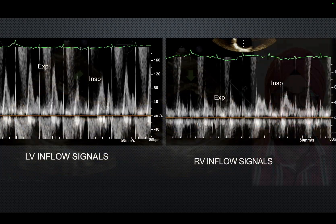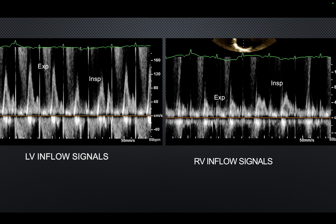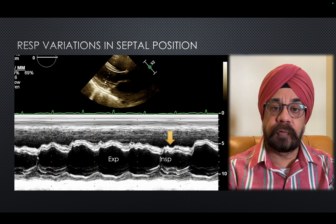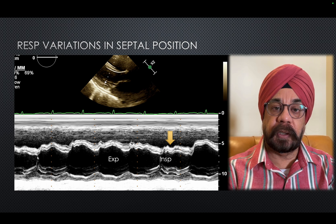Respiratory phasic variation is a very characteristic hallmark of constrictive pericarditis which differentiates it from restrictive cardiomyopathy. There are increased inflow velocities during expiration in the LV, and on the RV there are increased inflow velocities during inspiration — that's the key difference. This is a very important and specific sign of constrictive pericarditis. You also see the movement of the interventricular septum during respiration — the septum moving towards or away from the LV during inspiration and expiration.